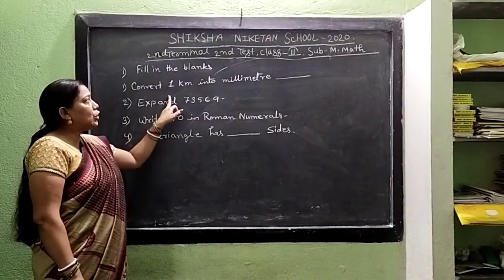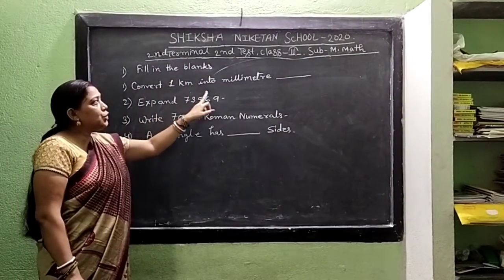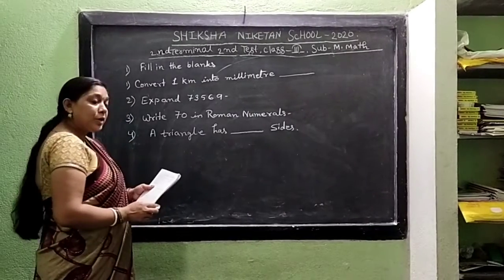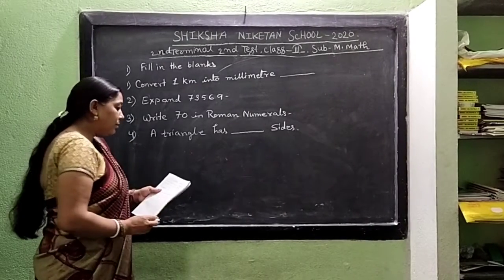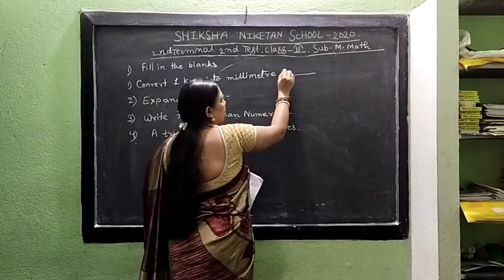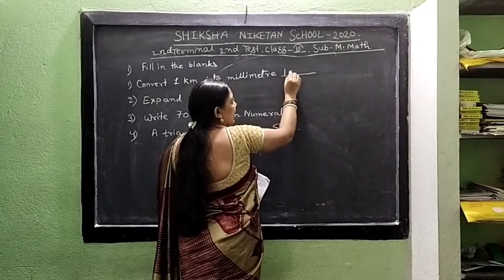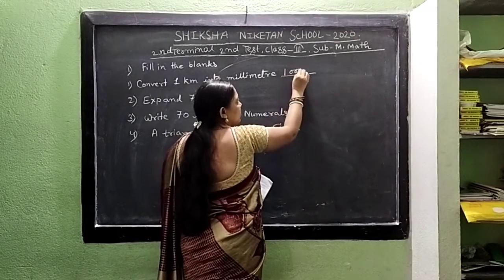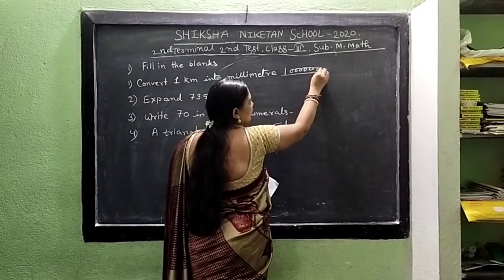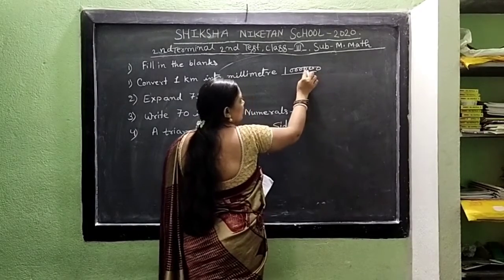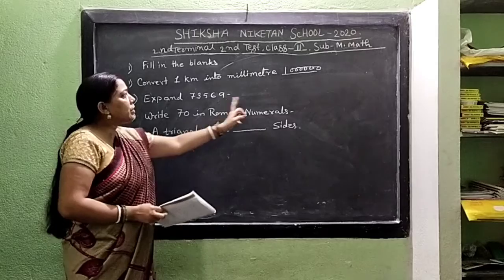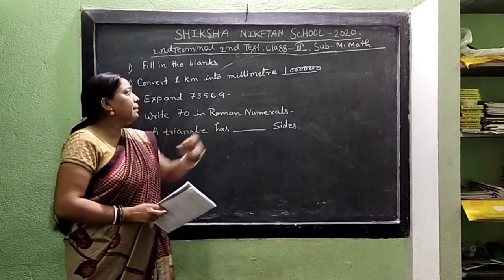Convert 1 kilometer into millimeter. 1 kilometer is equal to 10 lakh millimeter. We write here 1 and 6 zeros. 1 kilometer is equal to 10 lakh millimeter.